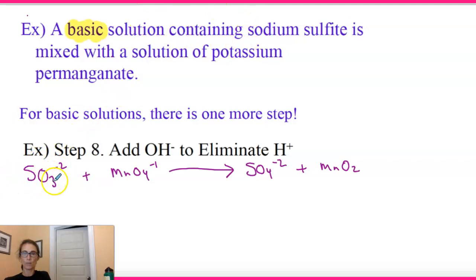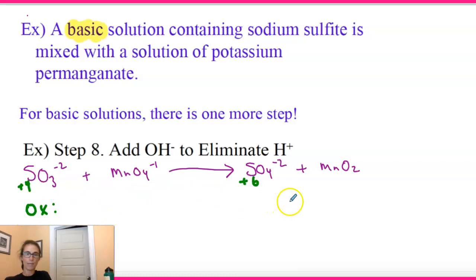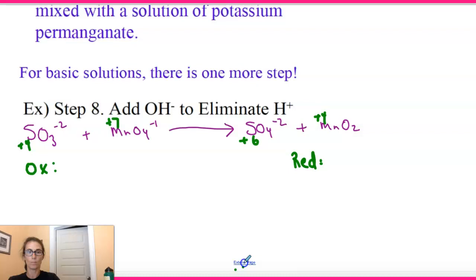We have our sulfur going from: three times negative two is negative six, so sulfur is plus four in SO₃²⁻. Then in SO₄²⁻, four times negative two is negative eight, so sulfur is plus six. So sulfur goes from plus four to plus six — that's our oxidation. For the reduction, Mn goes from plus seven — two times negative two is negative four, so two plus negative four gives plus four — so Mn goes from plus seven to plus four.